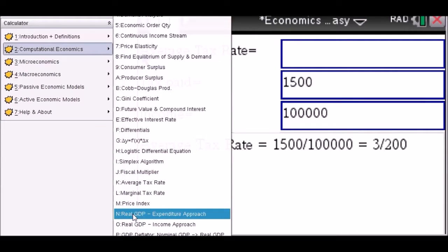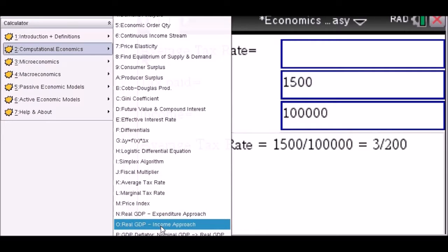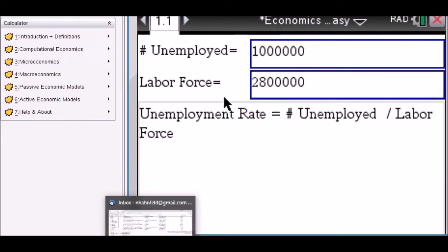Price index computation. GDP expenditure approach and income approach is being displayed here for you. GDP deflator. Everything all the way down to unemployment rate.